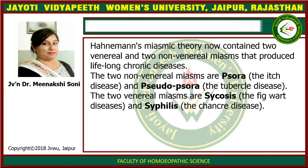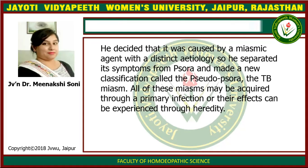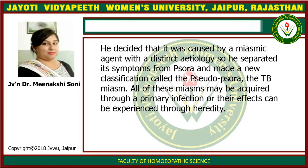Hahnemann's miasmatic theory contains two venereal and two non-venereal miasms that produce lifelong chronic disease. The two non-venereal miasms are Psora and pseudo-Psora. Psora is the itch, and pseudo-Psora is the tubercular disease. The two venereal miasms are Sycosis — which means overgrowth — and Syphilis — the chancre, which is a destructive type of miasm. He decided that tubercular disease was caused by a miasmatic agent with a distinct etiology, and separated its symptoms from Psora to make a new classification: pseudo-Psora, or the TB miasm. All these miasms may be acquired through a primary infection or their effects experienced through heredity.